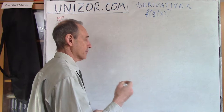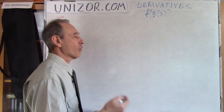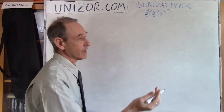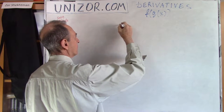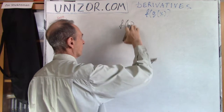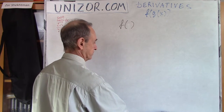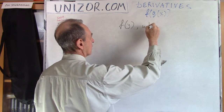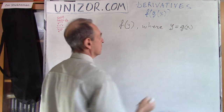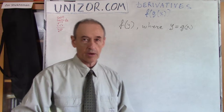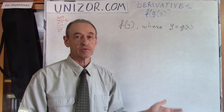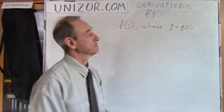Let's first transform this function into a slightly different look. It's exactly the same thing. I can say that this function is f at y, where y is equal to g of x. I didn't really do anything new right now — I have specified this compound function in this language. It's basically just a change of notation, nothing more than that.